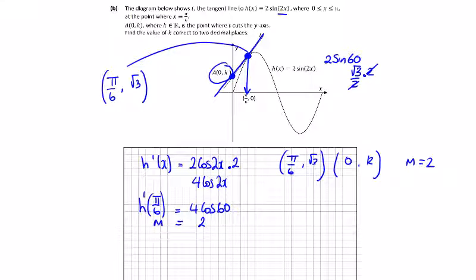So k minus root 3, k minus root 3, the change in y over the change in x, 0 minus pi over 6 is equal to 2.